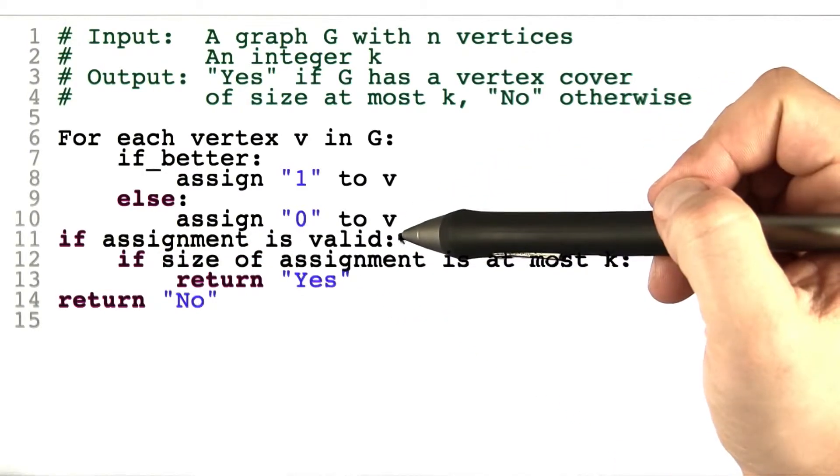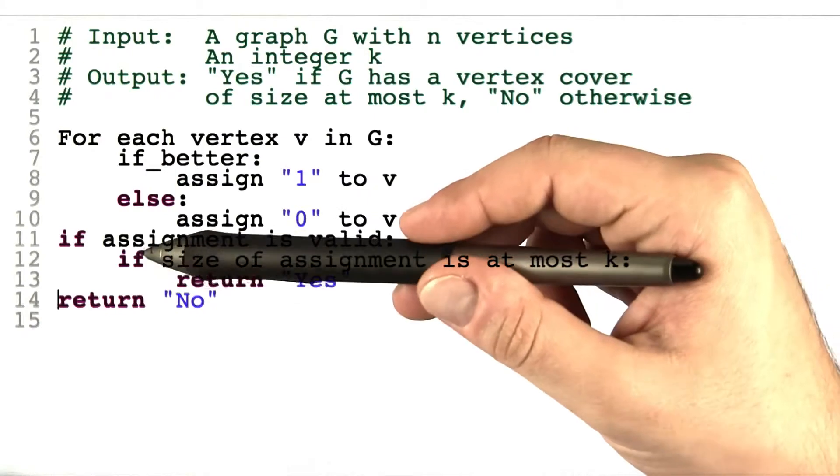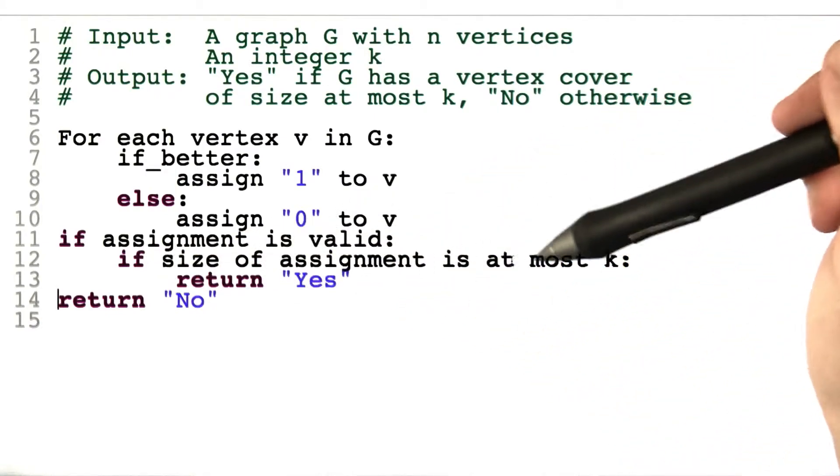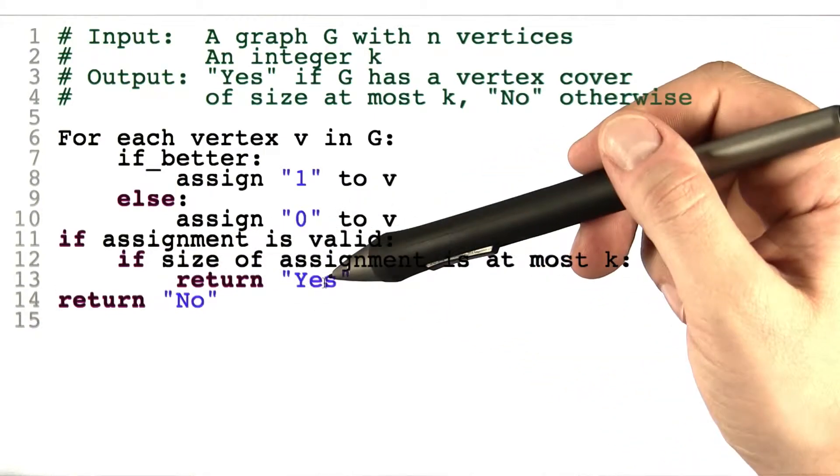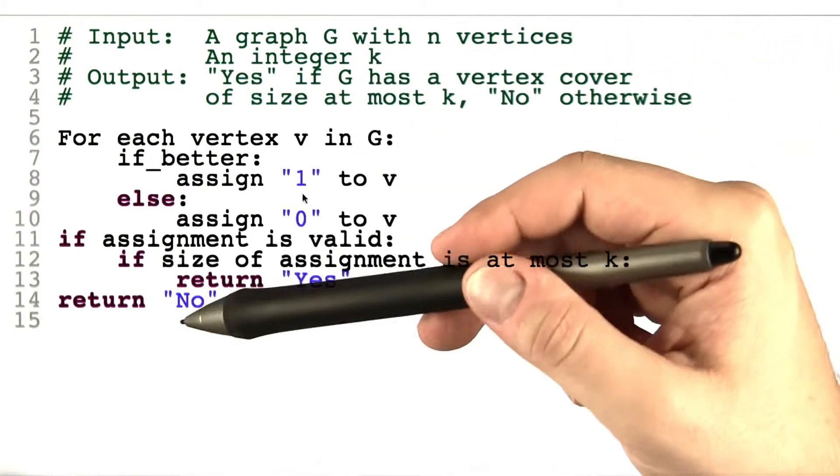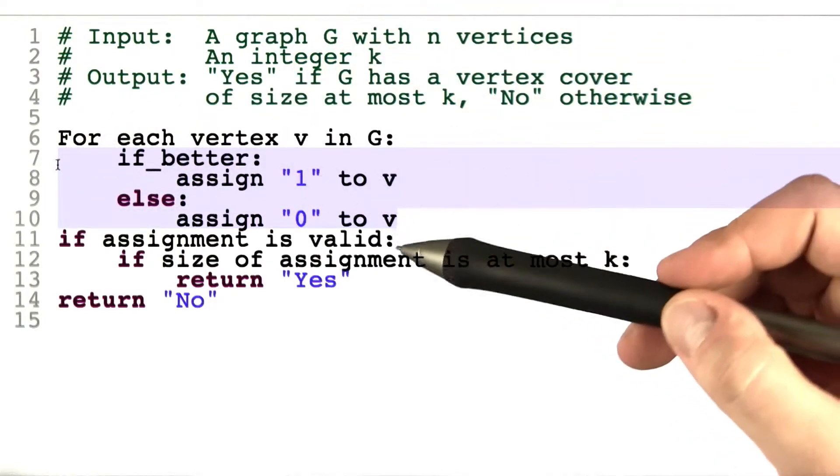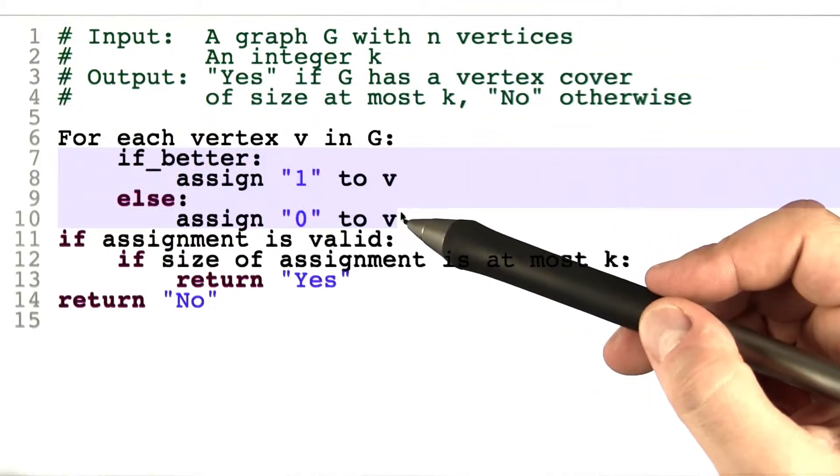Then we check if the assignment is valid, although we wouldn't actually have to do that, but I'll get into that in a minute. If the size of the assignment we've found is at most k, we say yes - the graph has a vertex cover of size at most k, and no otherwise. As you can see, we're putting a lot of trust into this part of the function.